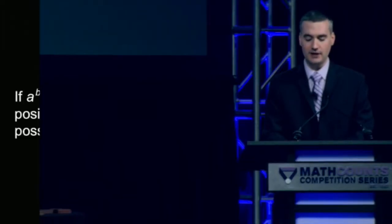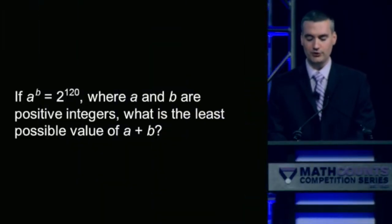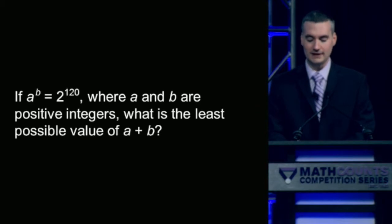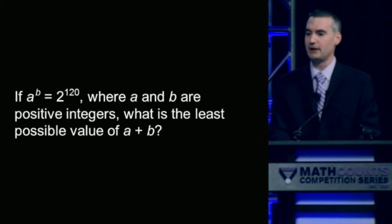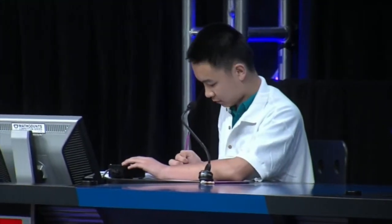So Walker leads 2-1 as we head into the fourth question of our matchup. If a to the b equals 2 to the 120, where a and b are positive integers, what is the least possible value of a plus b? Colin answers 46, and 46 is the correct answer.